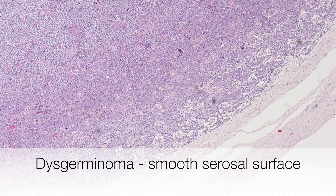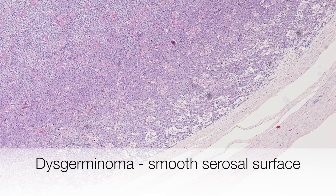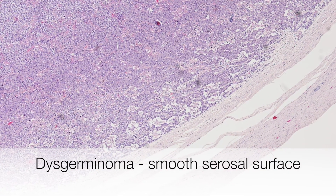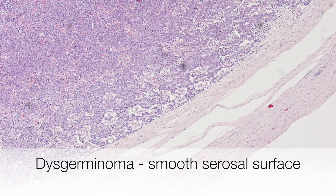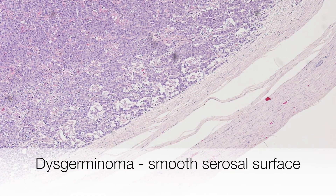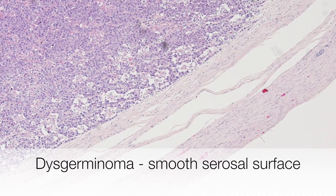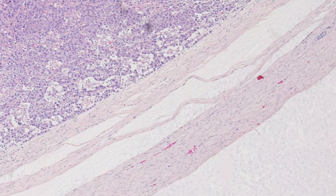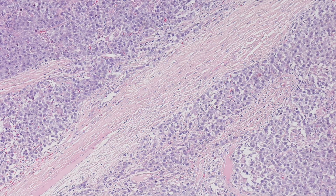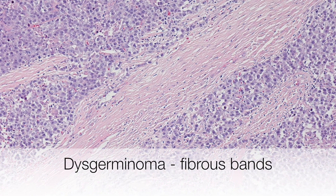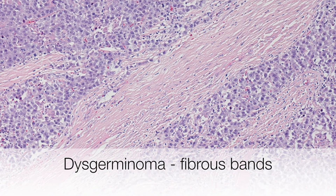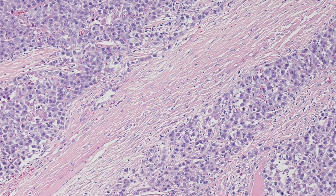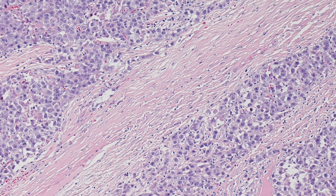This low power view of the dysgerminoma shows the smooth serosal surface. In this field you can see a fibrous band running through the dysgerminoma.